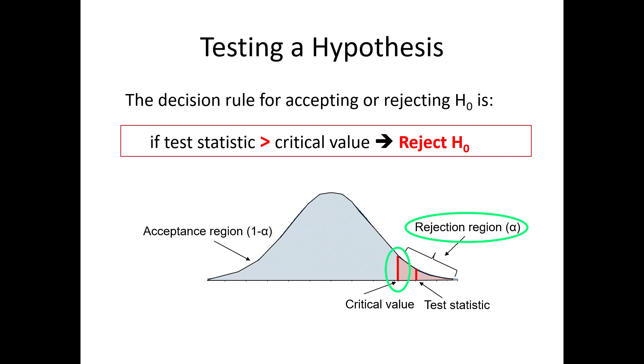Second, the critical value determines where the rejection region begins. As the critical value increases, or moves to the right in this case, the rejection region becomes smaller, so it becomes harder to reject the null.